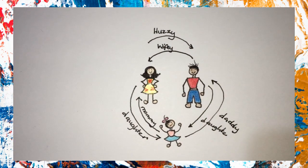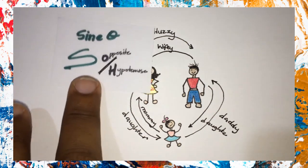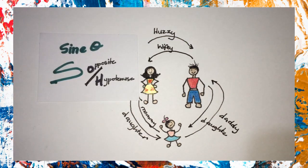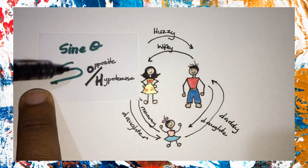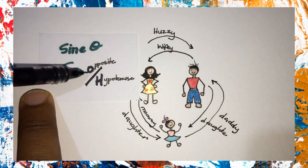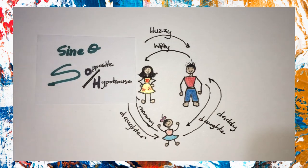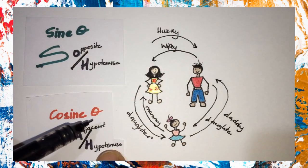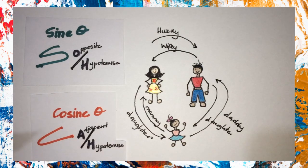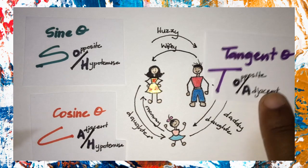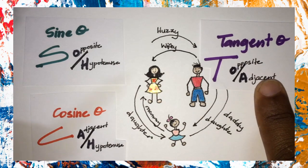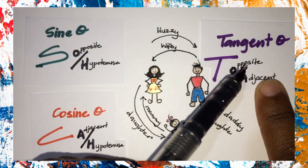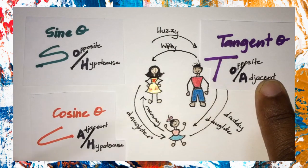Just like how there are different relationships in a family between one member and another, similarly, when we talk about the sine ratio in a right angle triangle, we're talking about how the angle operates with the opposite and the hypotenuse. When we're talking about the cosine ratio, we're talking about how the angle operates with the adjacent and the hypotenuse. When we're talking about the tangent ratio, we're talking about how the angle operates with the opposite and the adjacent.